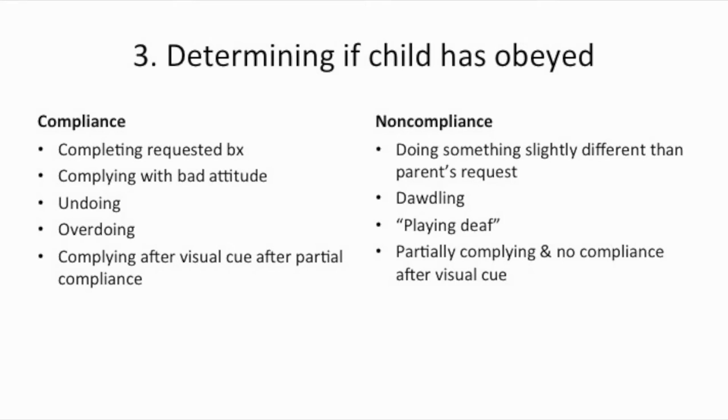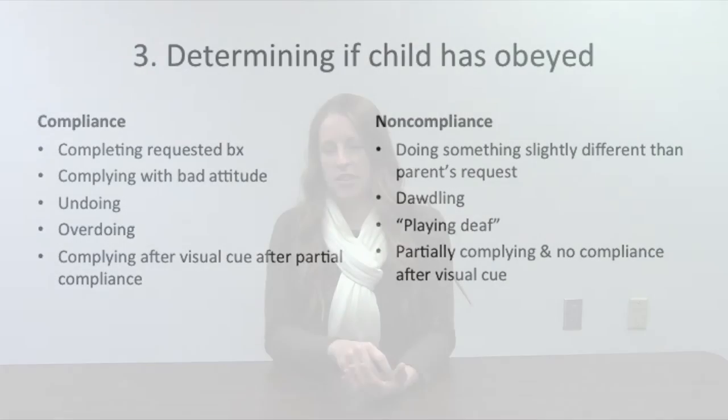The third step is teaching parents how to determine if their child has obeyed. Compliance is completing the requested behavior — if the command is 'please hand me that red block' and the child places it in your hand, that's compliance, even with a bad attitude. If the child does something called undoing — placing the block in your hand then taking it back — that is still considered compliance because they literally completed the command.